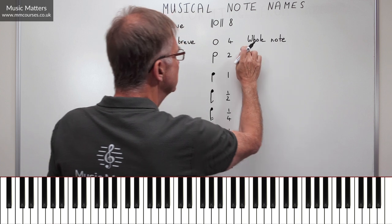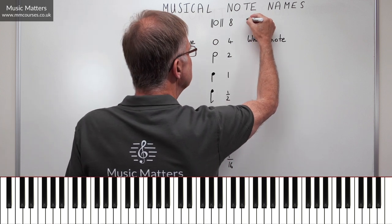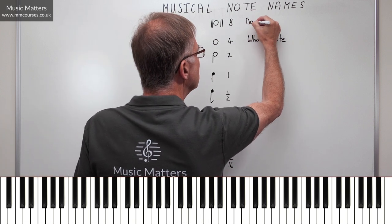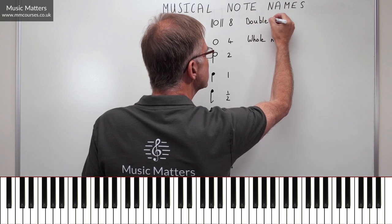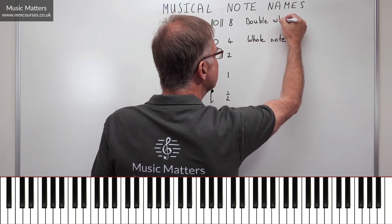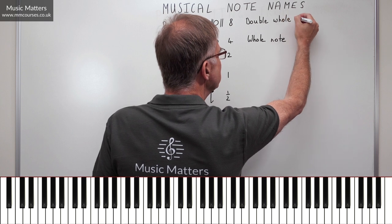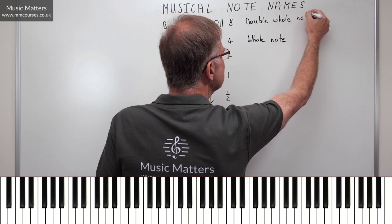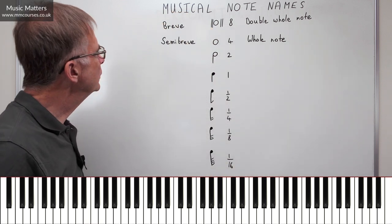In the US system, this is a whole note, and this is called a double whole note, which is also kind of logical, isn't it really? If the four is a whole note, well, this one must be double that. So there's a double whole note.